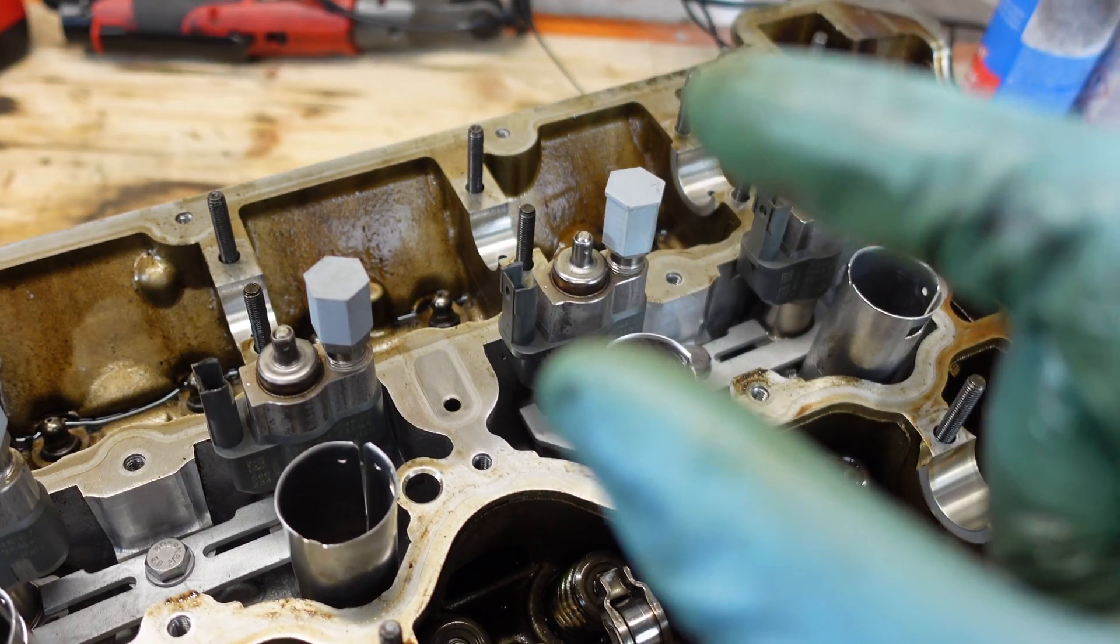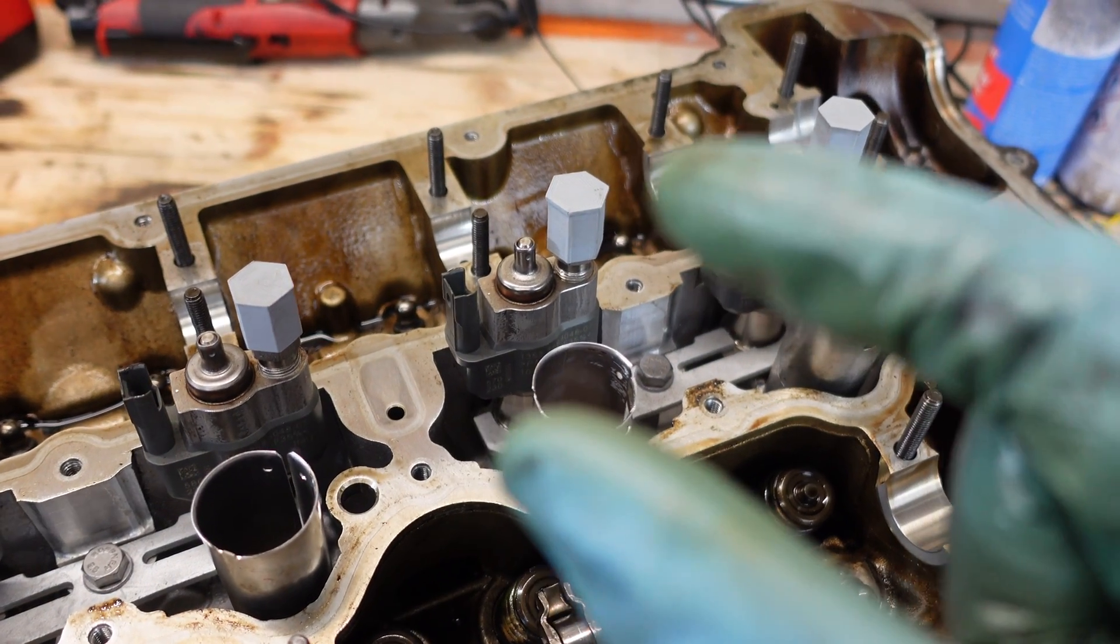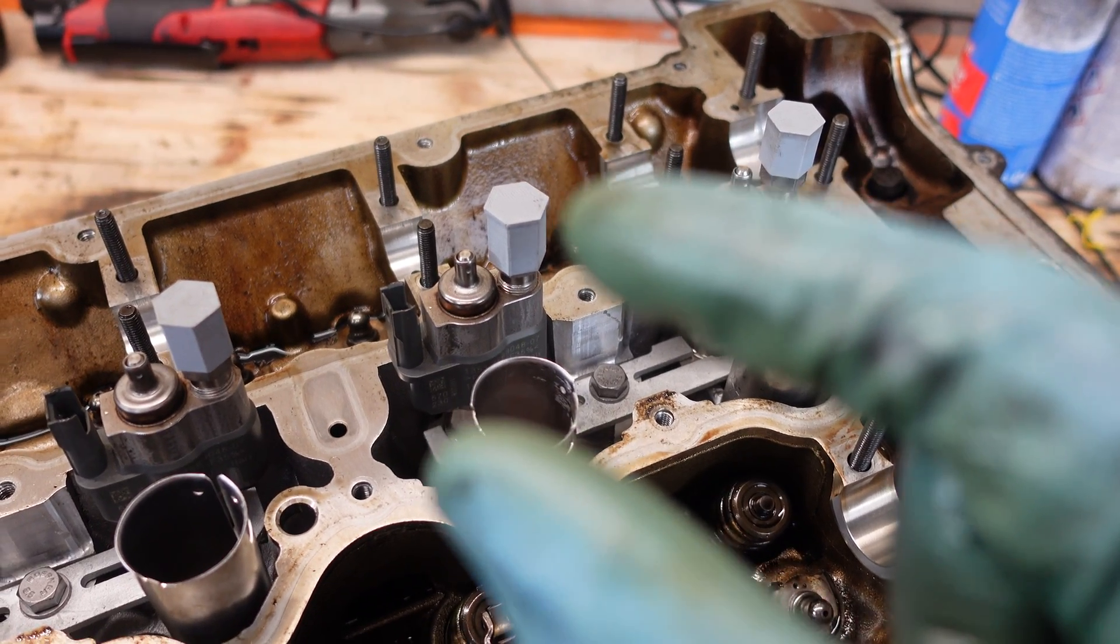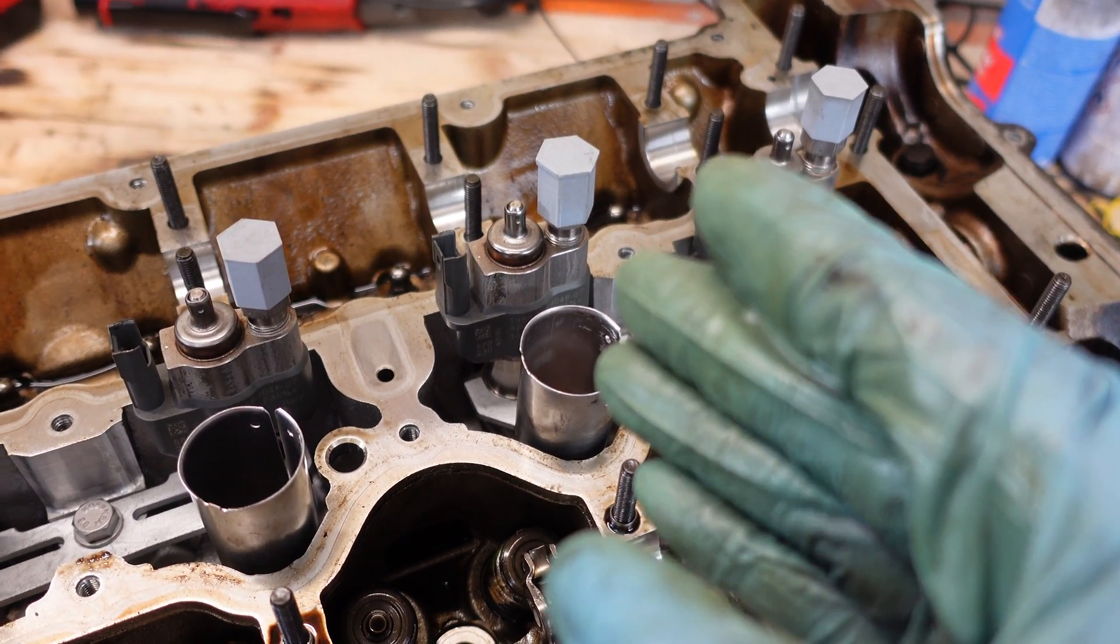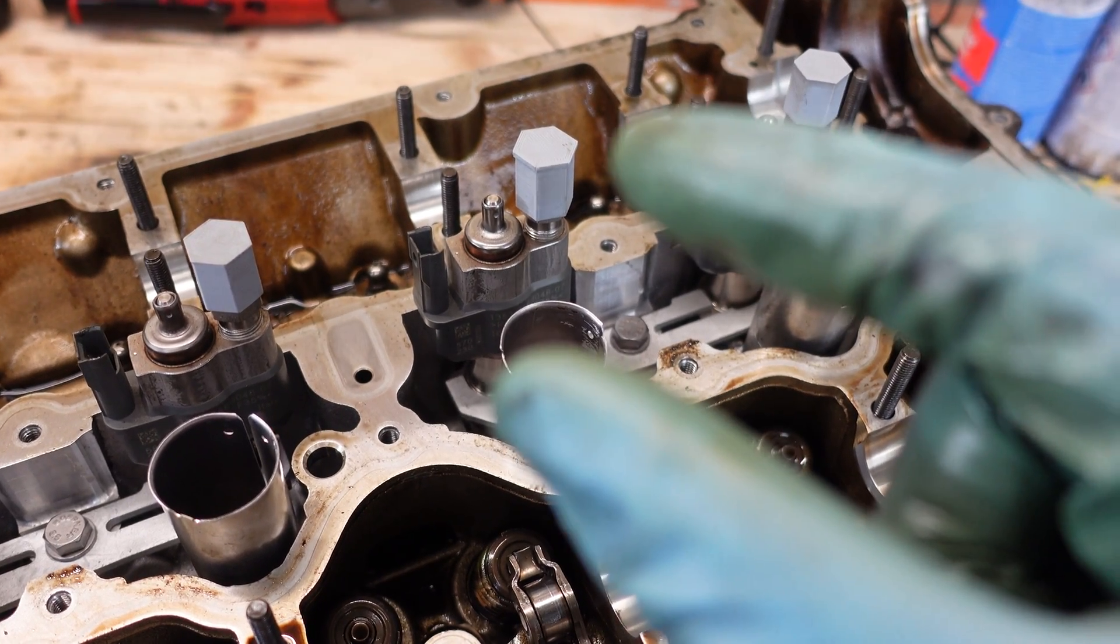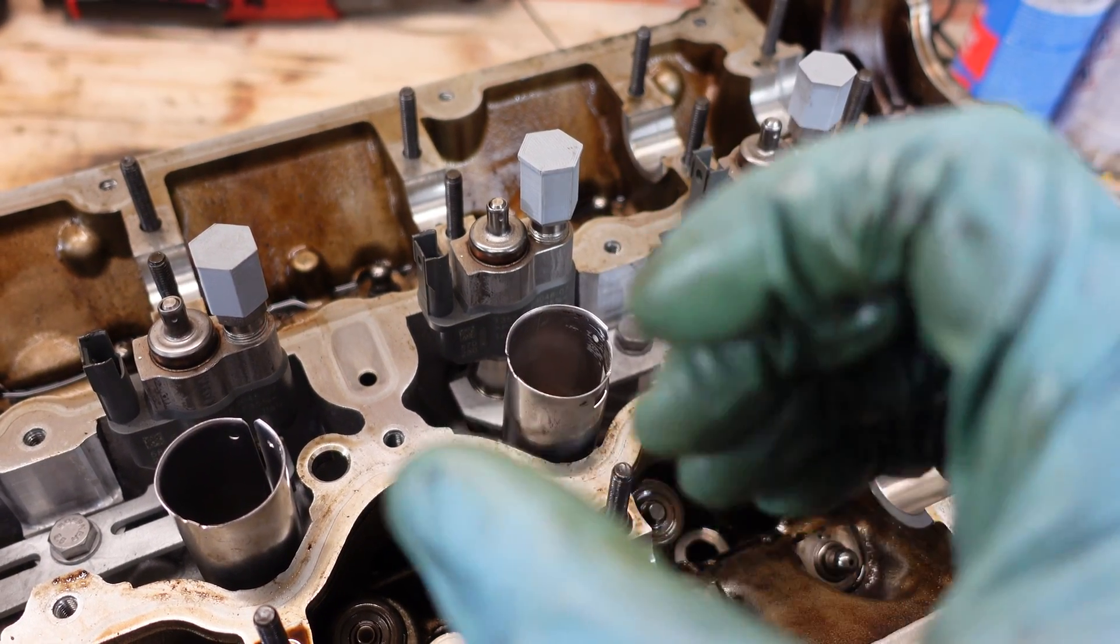So basically you can have two failure modes. One is that the non-return valve leaks. So the lifter is collapsed and it will not open. And the other failure mode is that the lifter is stuck. So the valve works. But it cannot expand because it's binding.